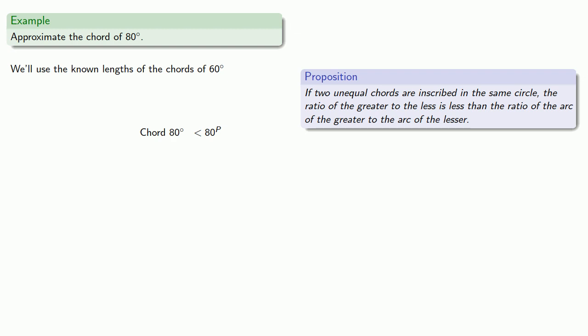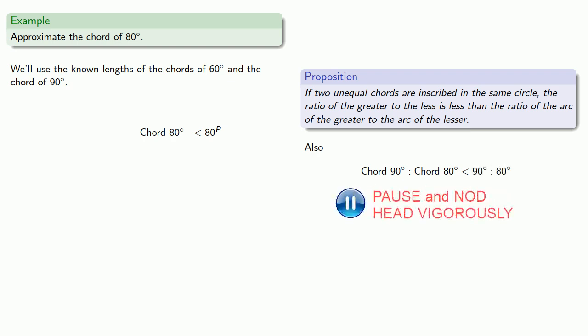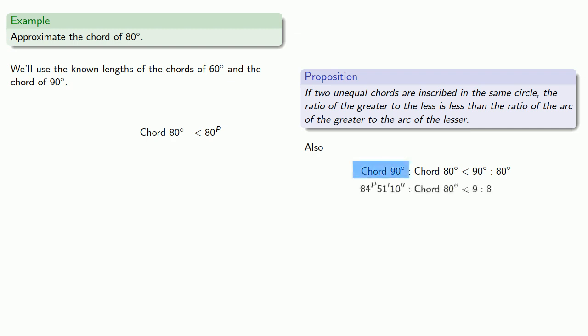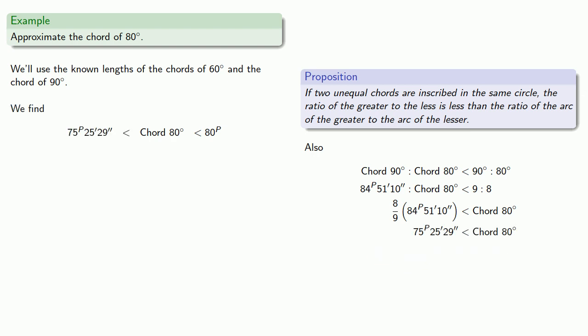We also want an angle greater than 80 degrees, so let's take the chord of 90 degrees. Again, the chord of the greater is to the chord of the lesser in a ratio less than the ratio of the angles. We know the chord of 90 degrees — that's 84, 51, 10 — and rearranging our proportionality, we find the chord of 80 degrees is greater than 8 ninths the chord of 90, or 75, 25, 29. So we have a lower bound on the length of the chord of 80 degrees. Since our angles of 60 degrees and 90 degrees are not very close to 80 degrees, our bounds are very loose. We could get better bounds if we could find the chords of angles closer to 80 degrees.